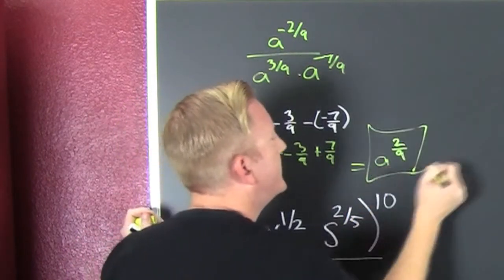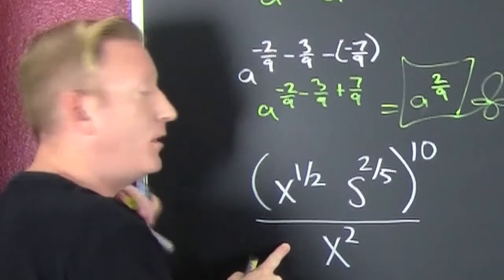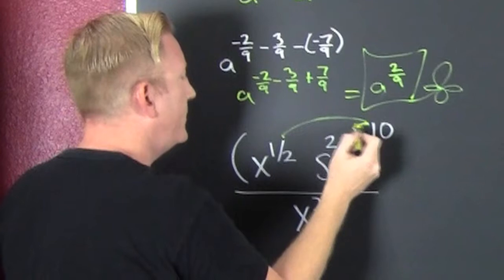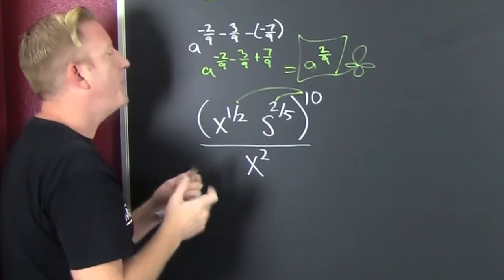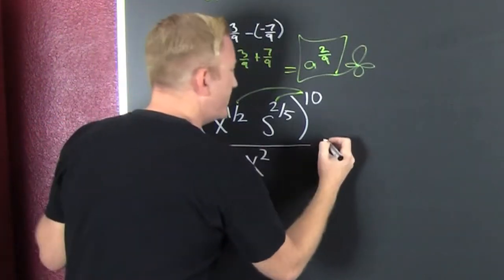Haircut. Haircut. What's next? We're down over here. Oh! Make it rain. Make it rain. So you got a power raised to a power, so you multiply. Let me put that step in there.